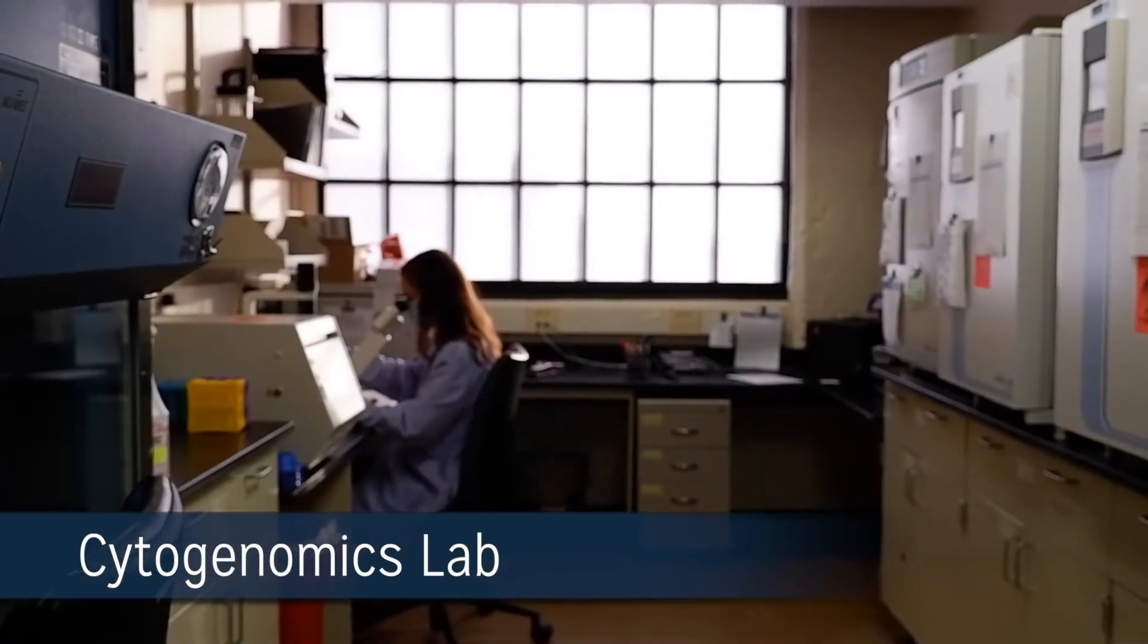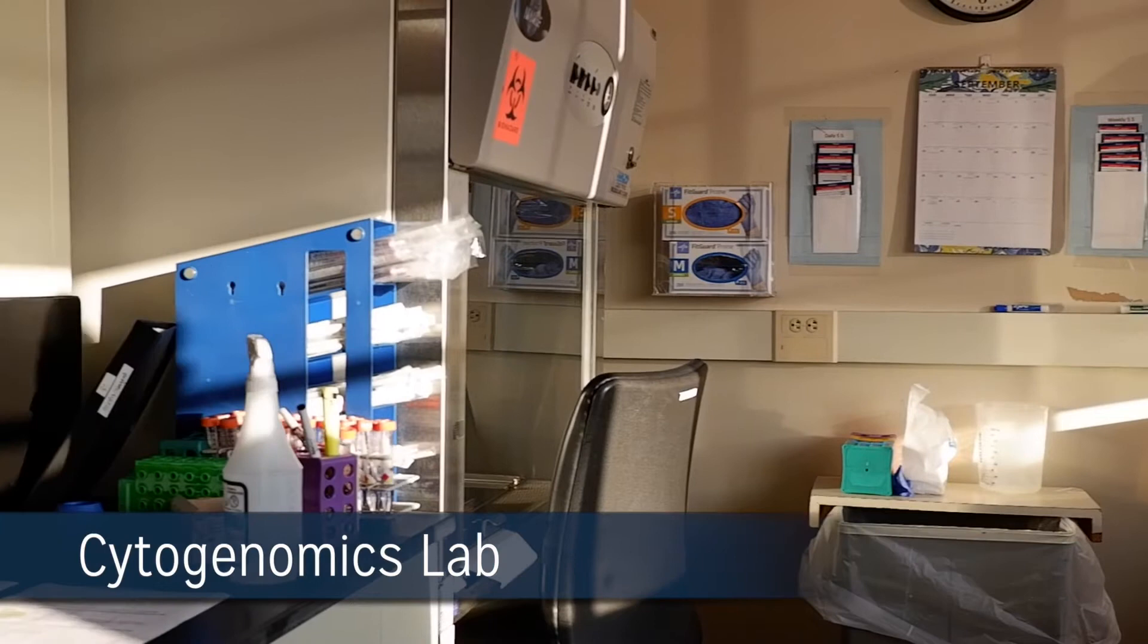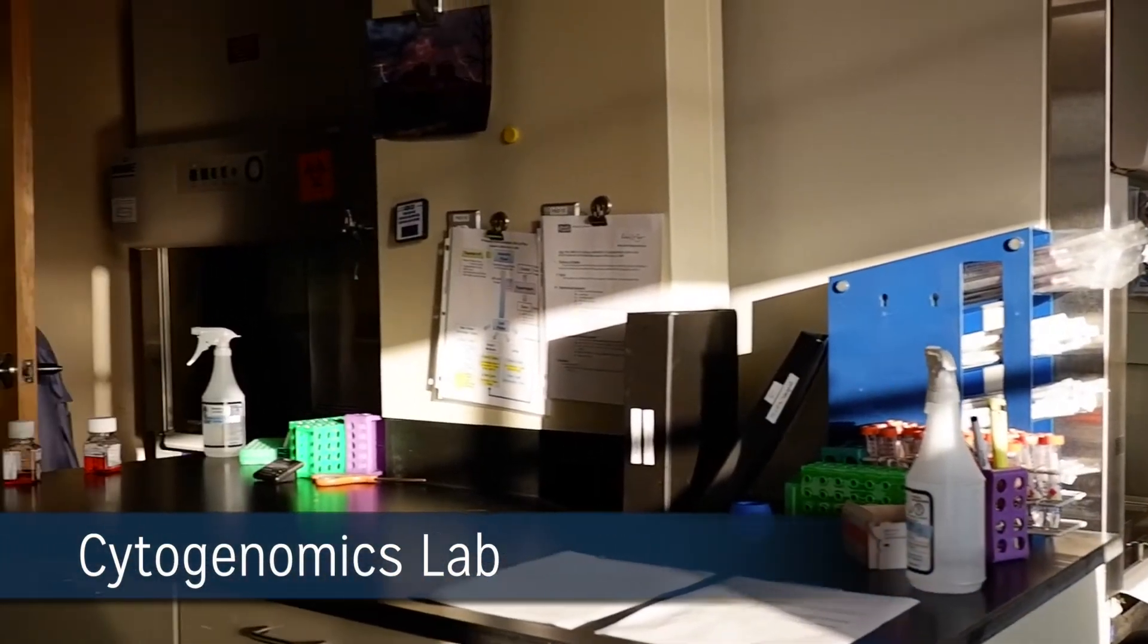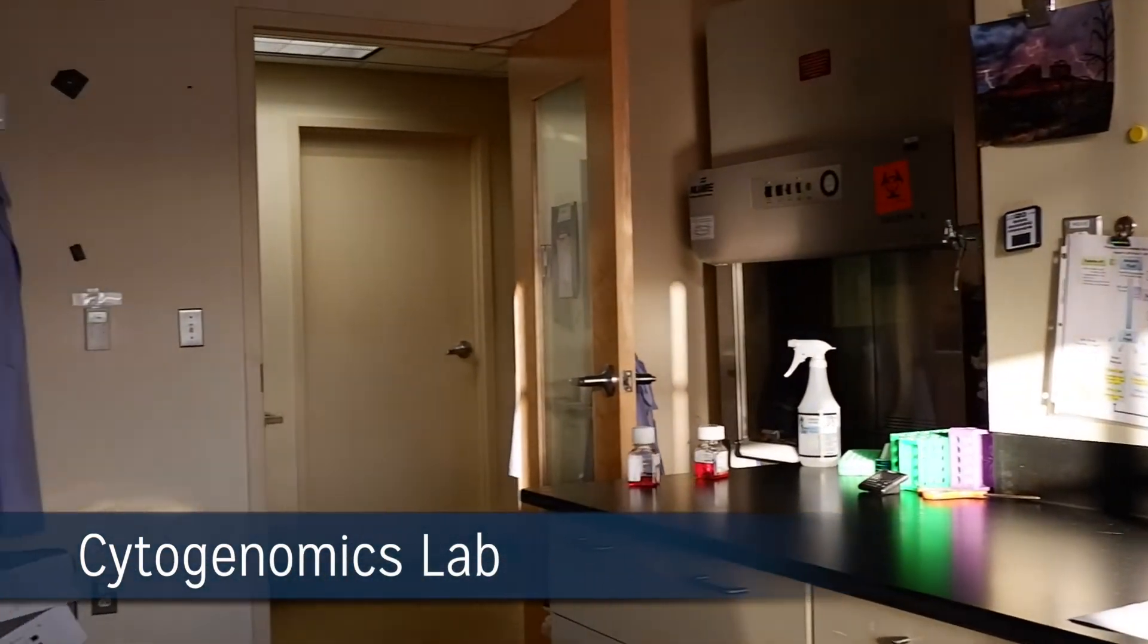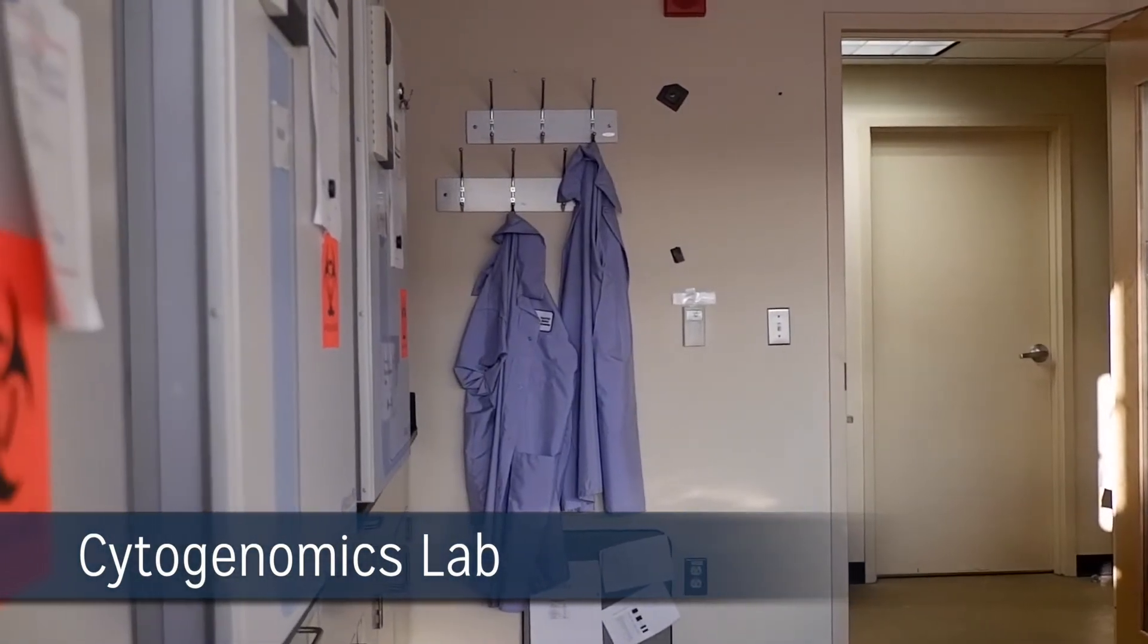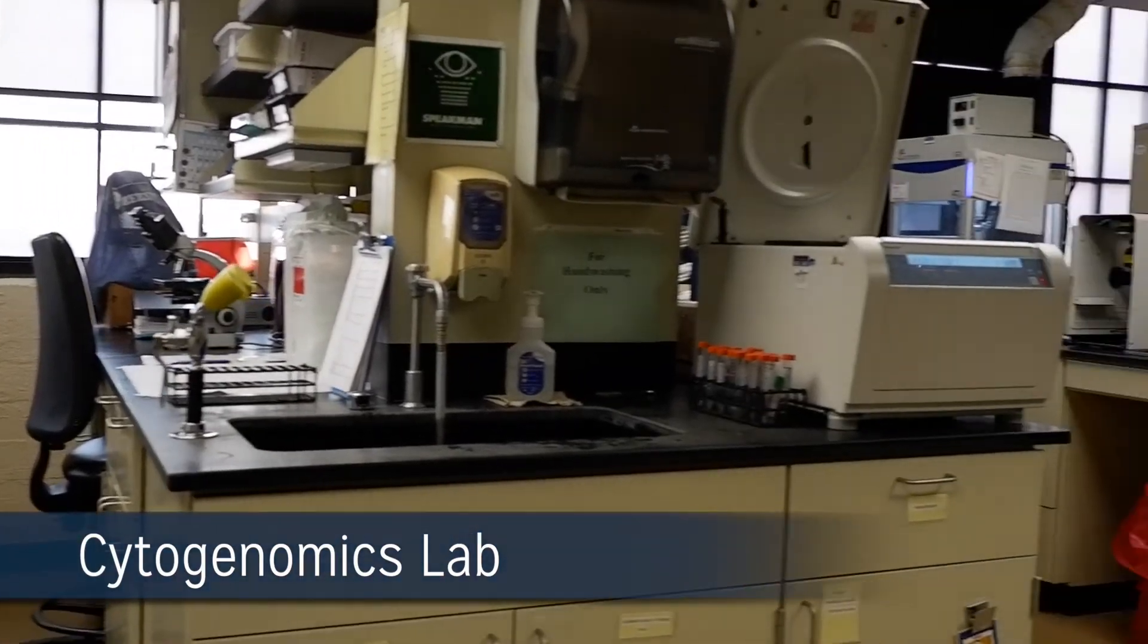The wet laboratory consists of long- and short-term tissue culturing techniques. Oncology samples include bone marrow, leukemic blood, and tumors, while constitutional samples include peripheral blood, amniotic fluid, chorionic villi, and tissues.